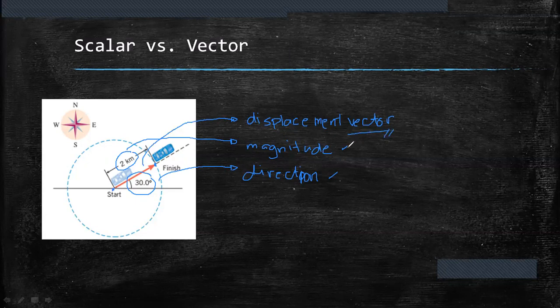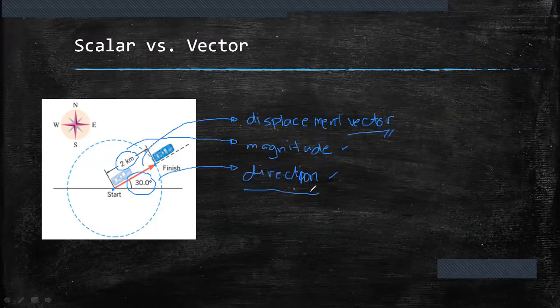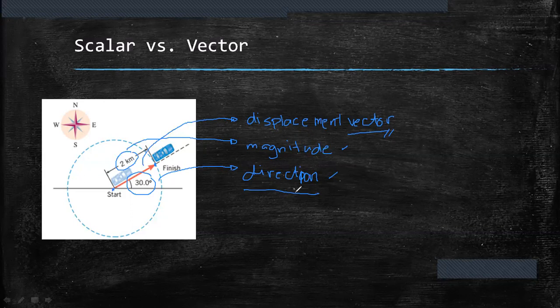The fundamental distinction between scalar and vector is the characteristic of direction. Vectors have the direction and magnitude, while scalars only have the magnitude.